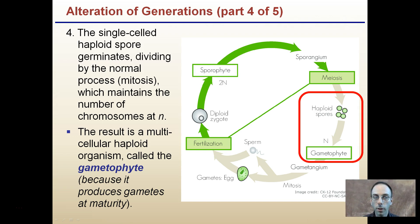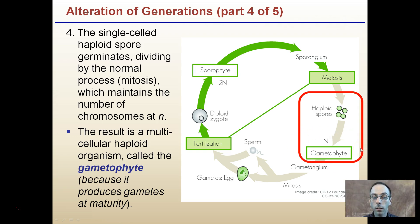Moving along: a single-celled haploid spore germinates, dividing by the normal process of mitosis, which maintains the chromosome number at n. Even though mitosis is occurring and cells are dividing, they're still haploid. Everything on this side of the line is haploid. The result is a multicellular haploid organism called a gametophyte — it's a multicellular haploid organism, and it's called the gametophyte because it produces the gametes.